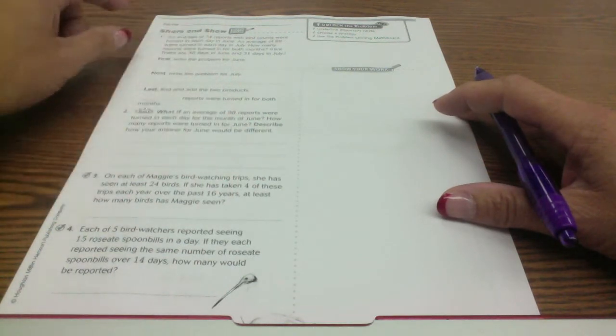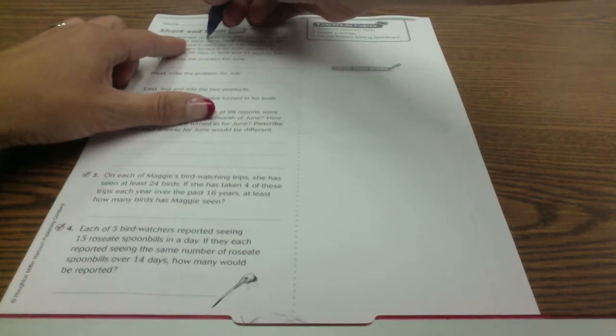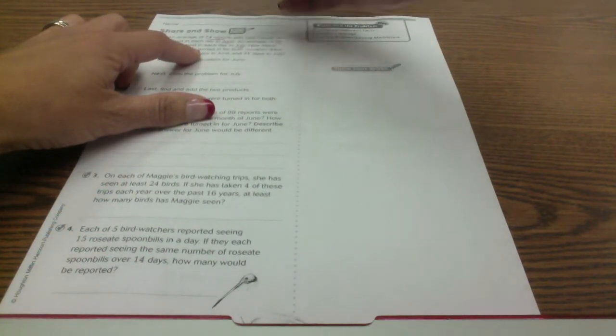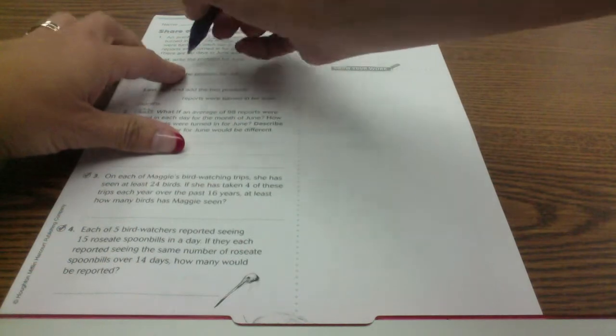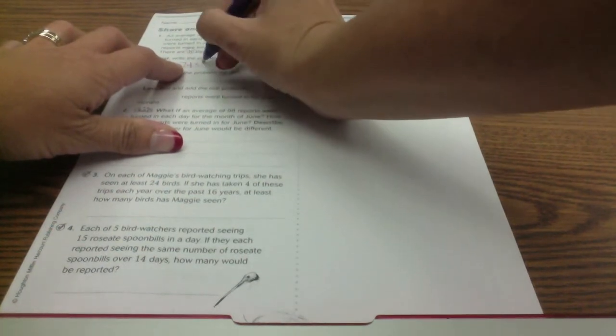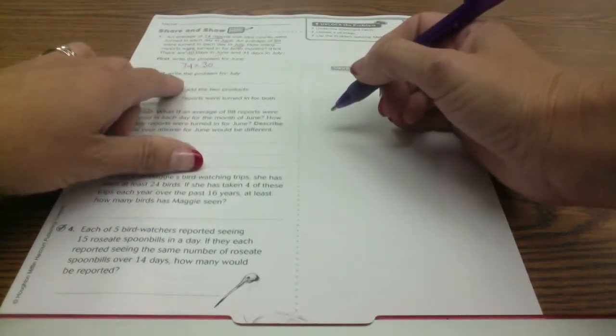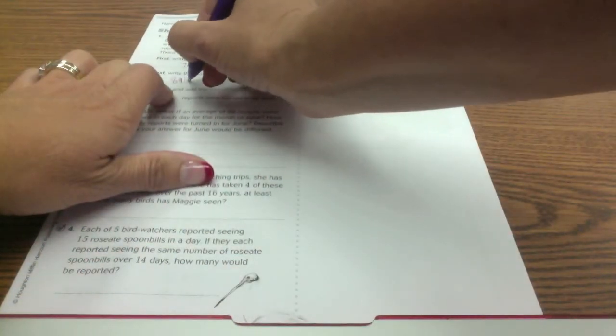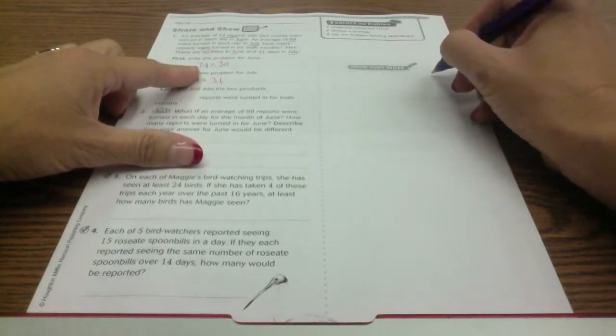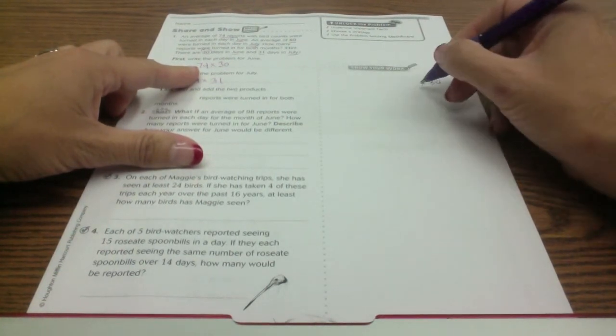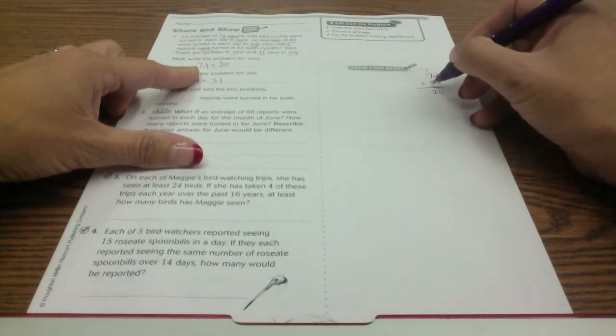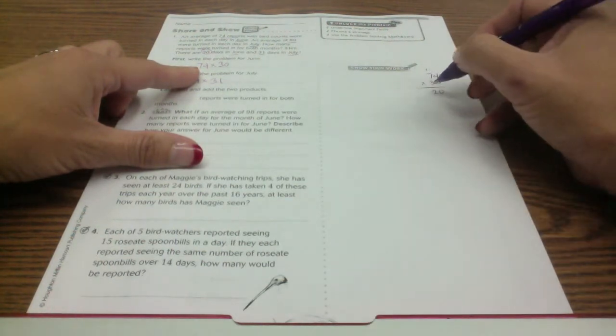I'm going to look back here. There was 74 reports in June and 89 reports in July. So I know that for June I'm gonna need 74 times 30 days in June, and then for July I'm gonna need to do 89 times 31 days in July. So 74 times 30, I'm gonna do my work right here. 30 times 4 is 120, 3 times 7 is 21 plus 1 is 22.